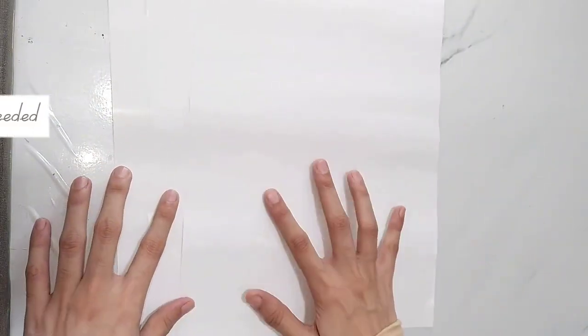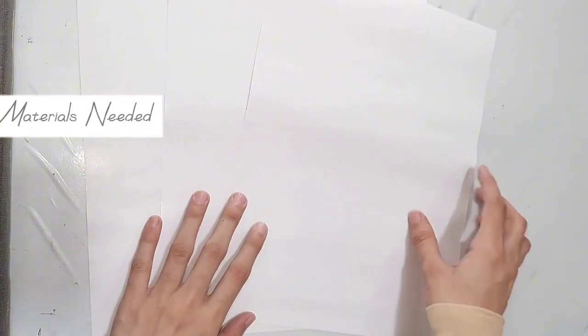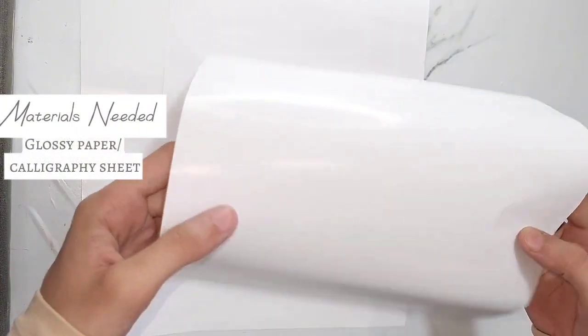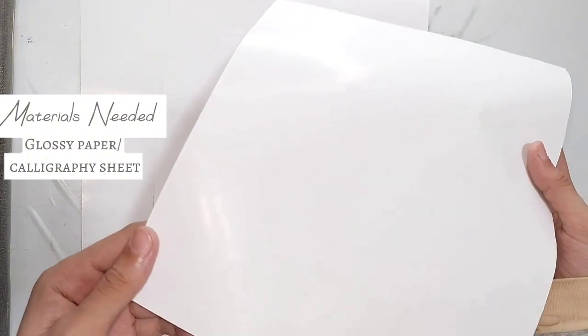First of all, the paper used for Arabic Calligraphy is called Art Paper, which we use glossy paper and glossy sheets. This can also be found in local shops and online shops.